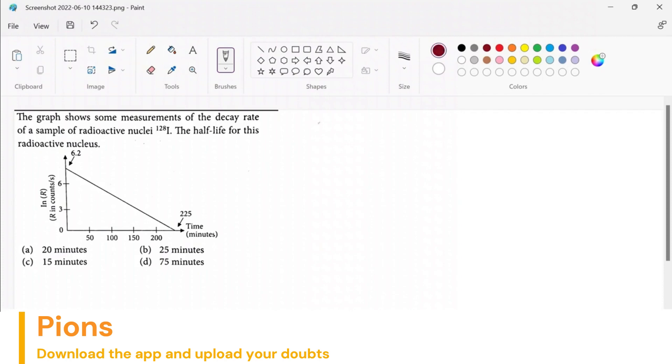Decay rate means the rate at which the given nuclei is undergoing the decay process. The decay rate is given by R = R₀e^(-λt).